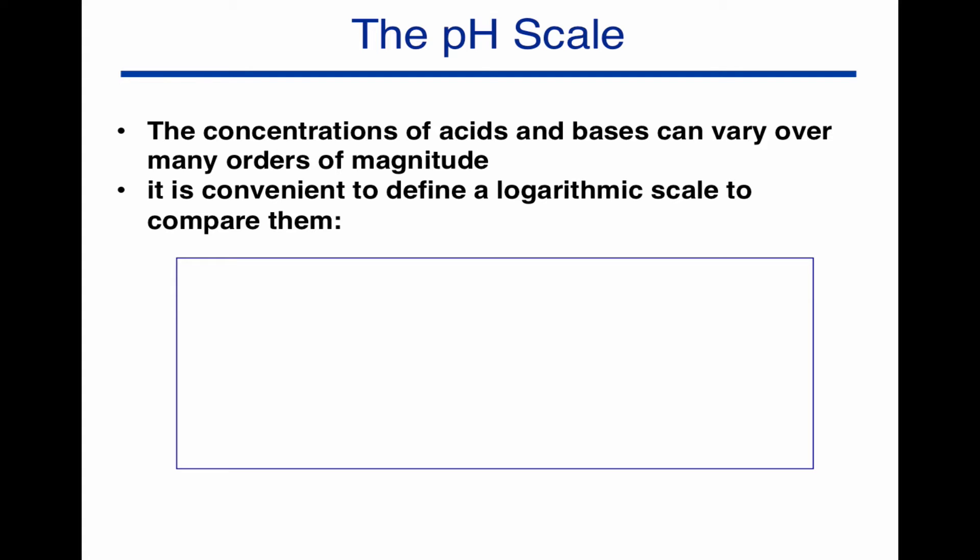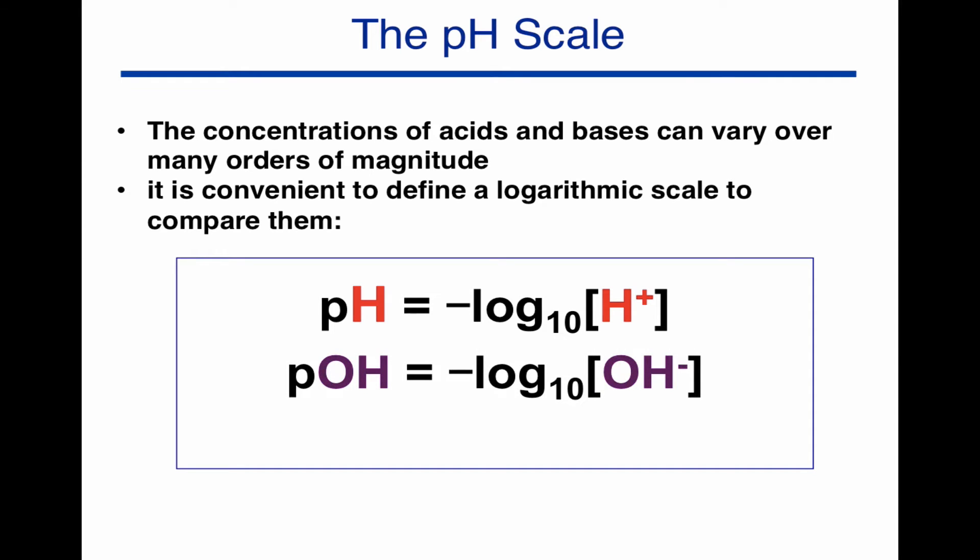It's much more convenient to actually use a log scale to compare them, and so we define pH as being minus log to the base 10 of the H plus concentration, and pOH is minus log to the base 10 of the OH minus concentration.